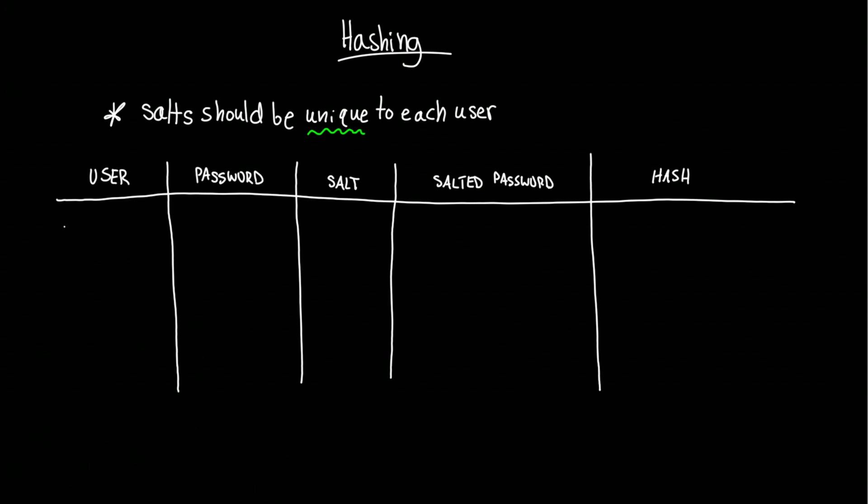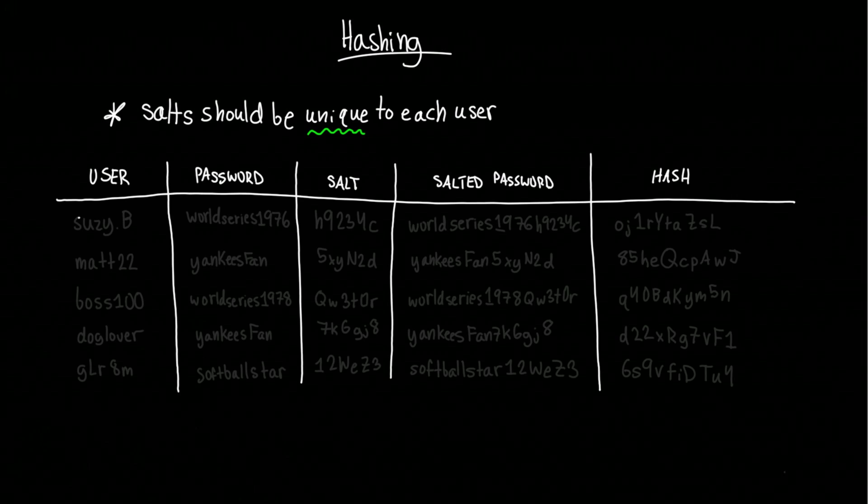This involves adding a randomly generated string of characters called a salt to each user's individual password before hashing and storing it. This added entropy reduces the efficacy of dictionary lookups. While a pre-computed table will contain the hashes for common passwords, it probably won't include those for salted hashes.